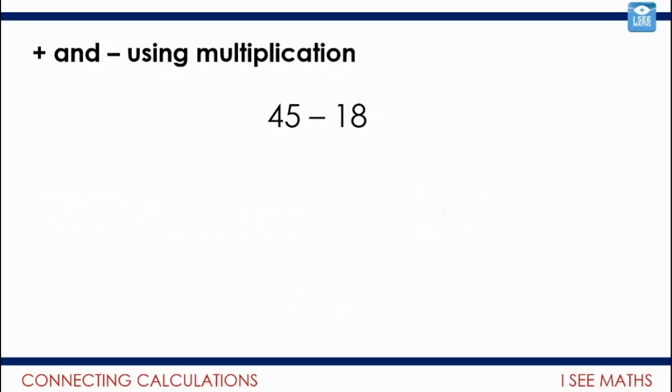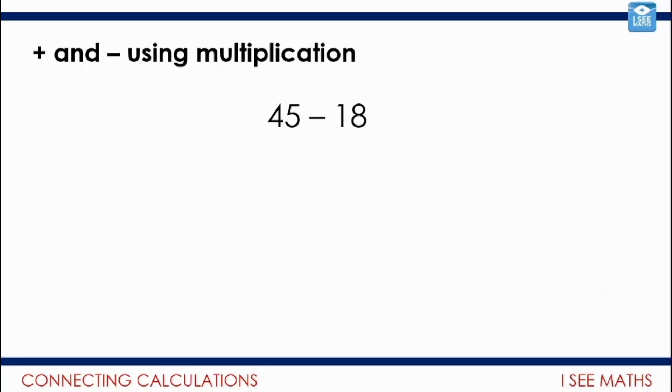Have a think about this one: 45 subtract 18. Can I represent that as a multiplication? Pause the video. What multiplication could it be? What factor might join 45 and 18? Let's have a look. 45 and 18, a factor they both share is 9. So 45 is 5 nines, 18 is 2 nines. So the difference between 45 and 18 is actually 3 lots of 9.